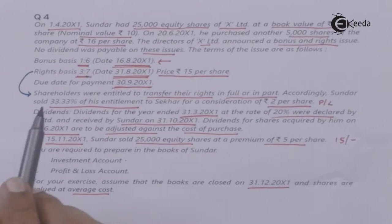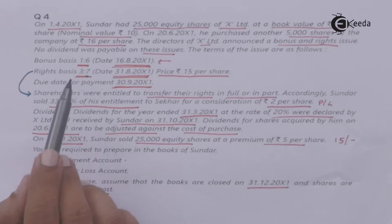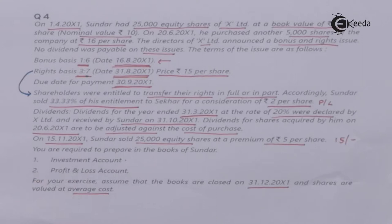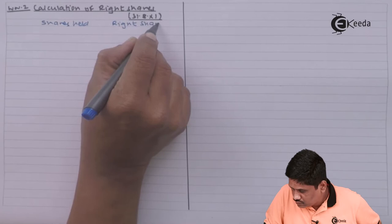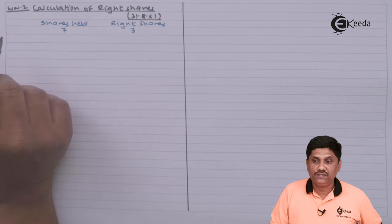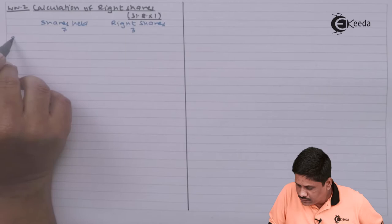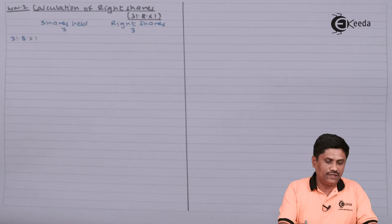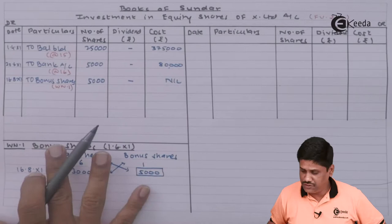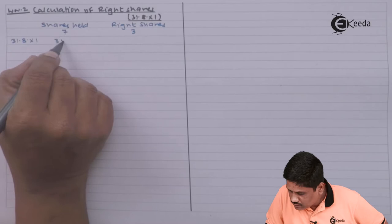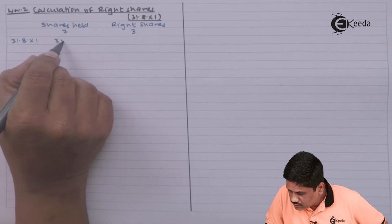Right entitlement: the basis is 3:7, meaning for 7 shares held, 3 right shares are the entitlement. The record date is 31st August 2001. On 31st August 2001, we check how many shares we hold. From the investment account: 25,000 + 5,000 + 5,000 = 35,000 shares. With 35,000 shares and a 3:7 ratio, by cross multiplication I am entitled to 15,000 right shares.